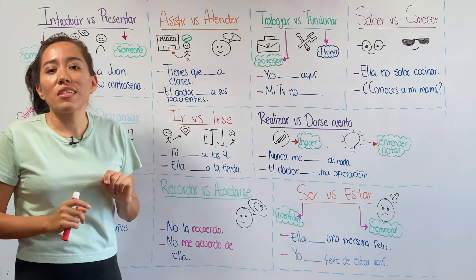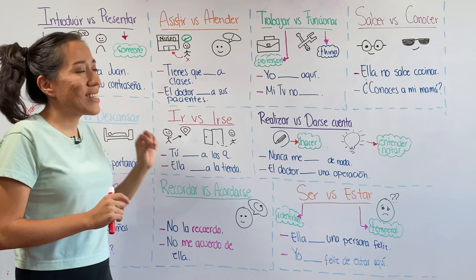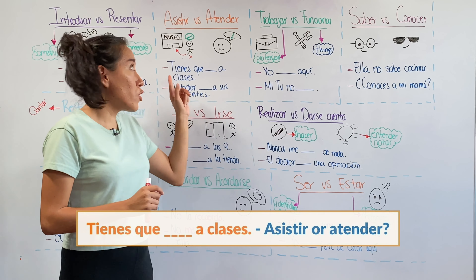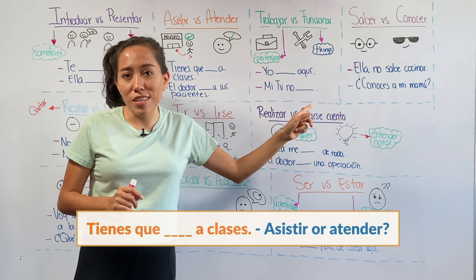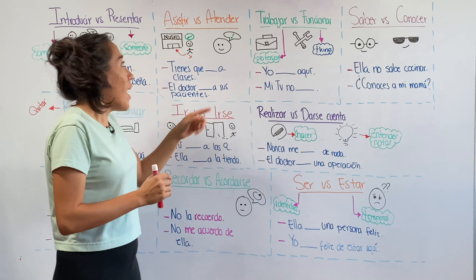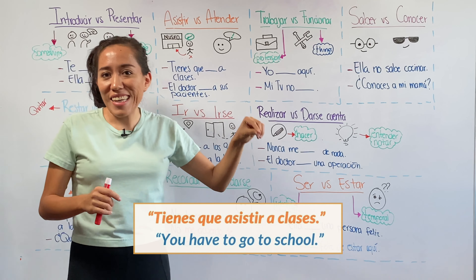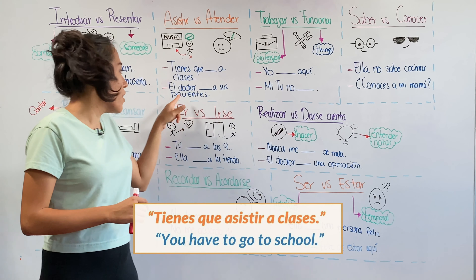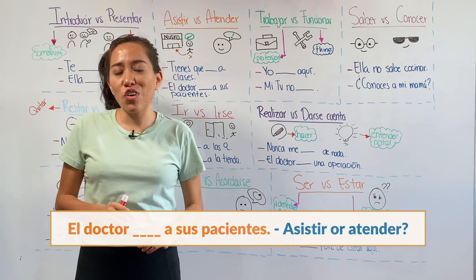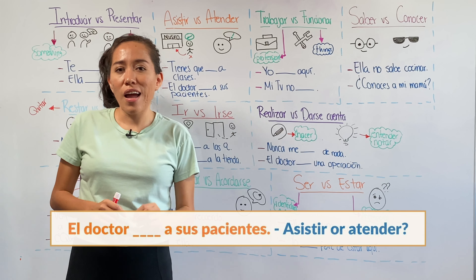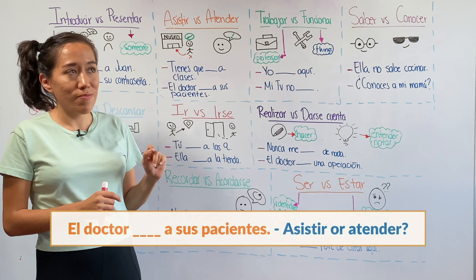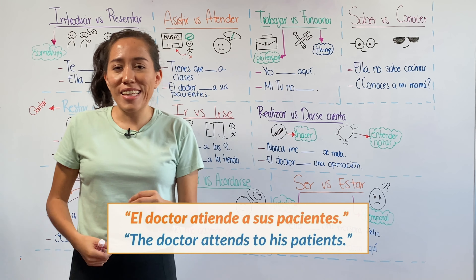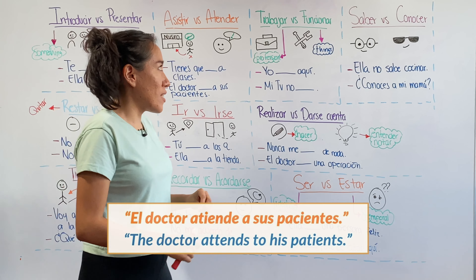Help me with these examples. Number one: tienes que blank a clases — will you use asistir or atender? Asistir: tienes que asistir a clases, you have to go to school. What about el doctor blank a sus pacientes? El doctor atiende a sus pacientes.